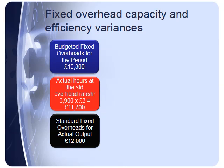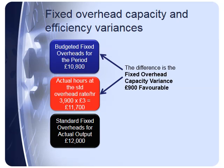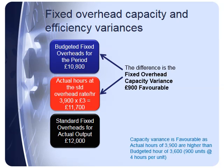The budgeted fixed overheads for the period were £10,800, and the standard fixed overheads for actual output is £12,000. Next, I calculate the third figure: actual hours at the standard overhead rate per hour. I actually used 3,900 hours, each charged at £3 per hour, giving £11,700. The difference between £10,800 and £11,700 is the fixed overhead capacity variance: £900 favourable, because actual hours of 3,900 were higher than budgeted hours of 3,600 — since 900 units × 4 hours = 3,600 budgeted hours.